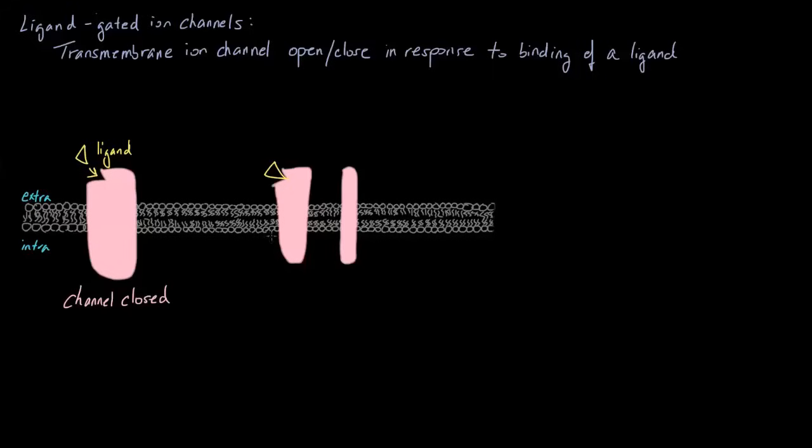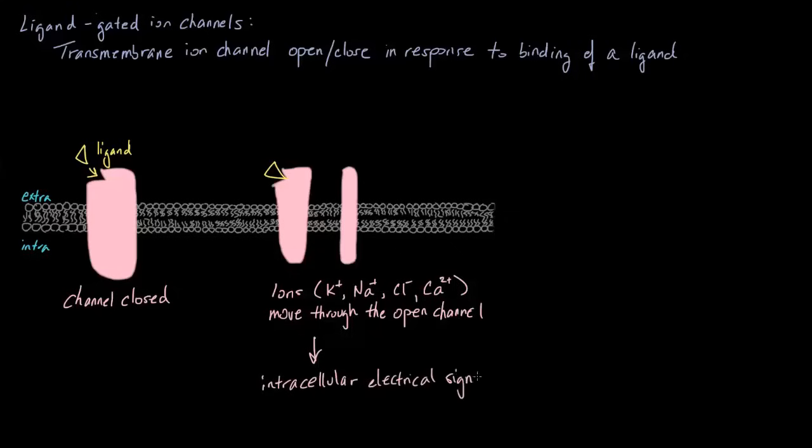So once this channel opens, it'll let ions like potassium, sodium, chlorine, or calcium, being the most common, move through the open channel. Once these ions are moving in and out, this will cause a change in the electrical properties of a cell. In other words, you'll convert this extracellular ligand signal into an intracellular electrical signal.